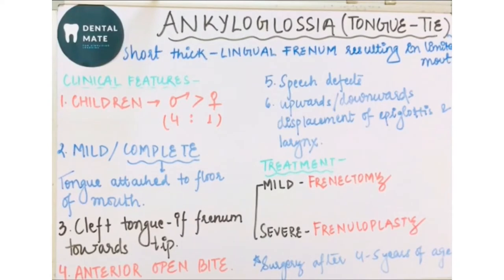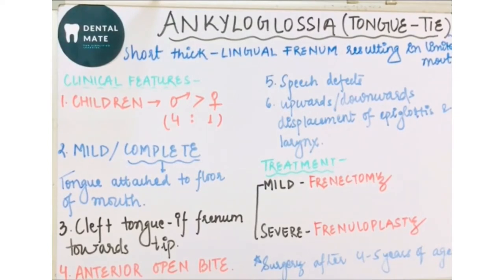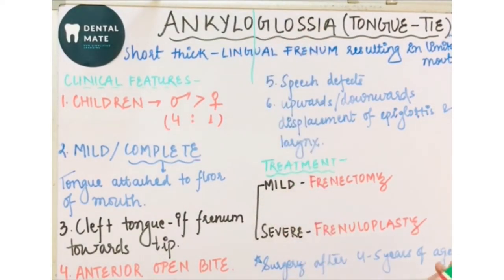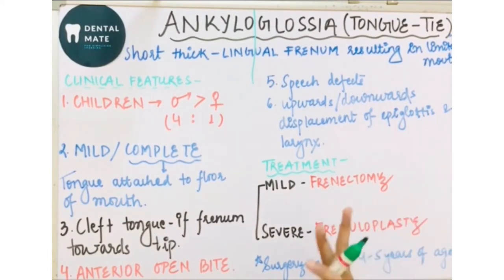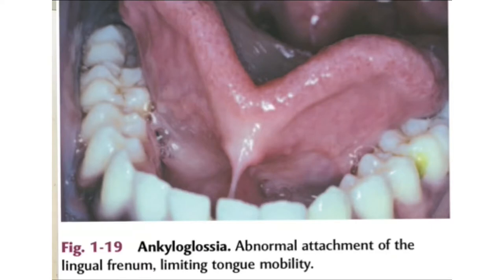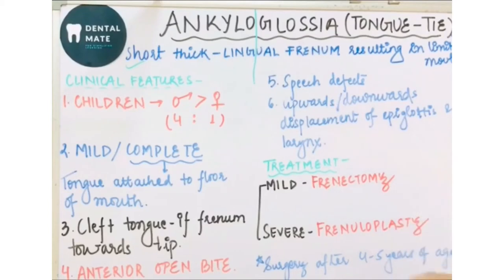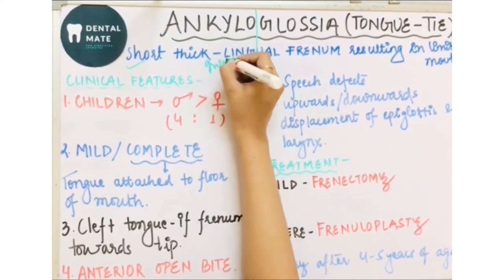Moving on to ankyloglossia, let us split the term — 'glossia' means tongue, and 'ankylo' refers to ankylosis. So ankyloglossia means tongue tie. In ankyloglossia, there is a short, thick lingual frenum present below the tongue on the floor of the mouth, resulting in limited movement of the tongue. This can be written in the introduction part.